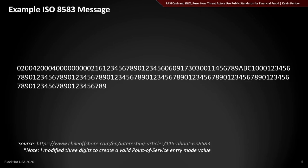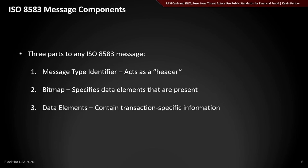On screen is a literal ISO 8583 message. Breaking it down, there are three parts: a message type identifier, which is like a file header with metadata about the message type; a bitmap, which indicates what fields are present; and the data elements, which are those fields. There are over a hundred different field options — such as the primary account number and transaction date — and the bitmap specifies which ones are present so you don't transmit all of them unnecessarily.